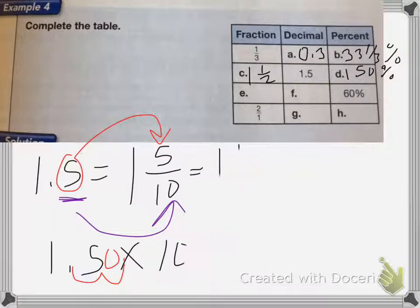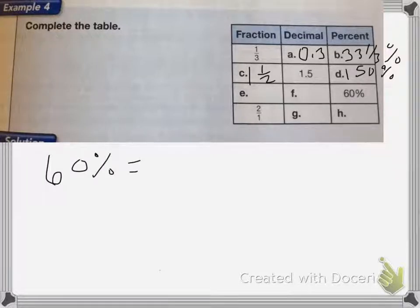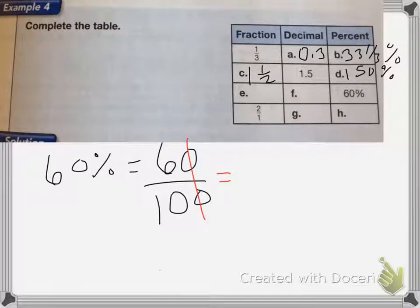On E, we have 60%. So I need to change that to a fraction first. 60% we know is 60 per hundred. The zeros cancel, so I get 6 over 10, which is the same as 3 fifths after I reduce.